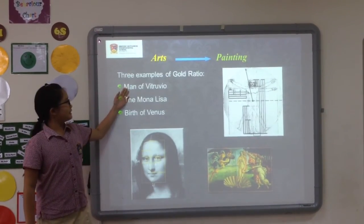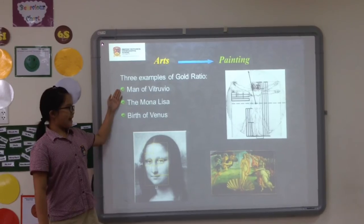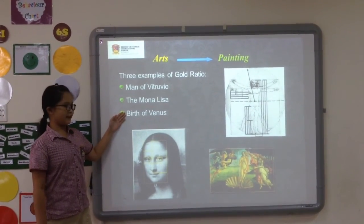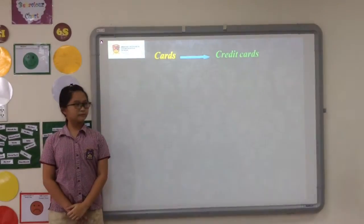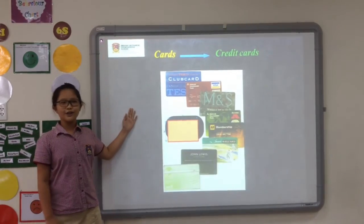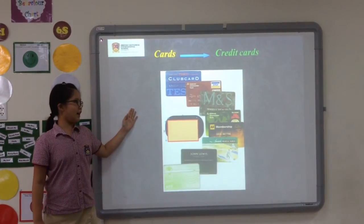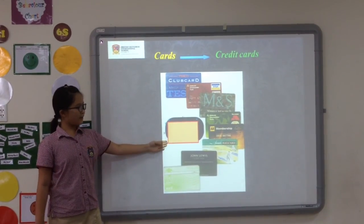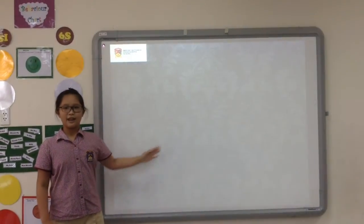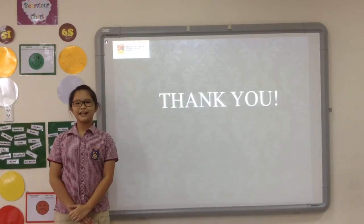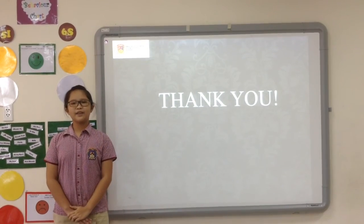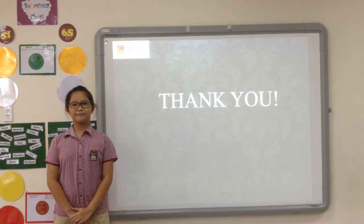Here are some examples: the Vitruvian Man, the Mona Lisa, the Bridge of Venice, and it is also used in credit cards. This is the golden rectangle. Thank you for listening and we hope you enjoyed. Remember, we are the BBIS team.